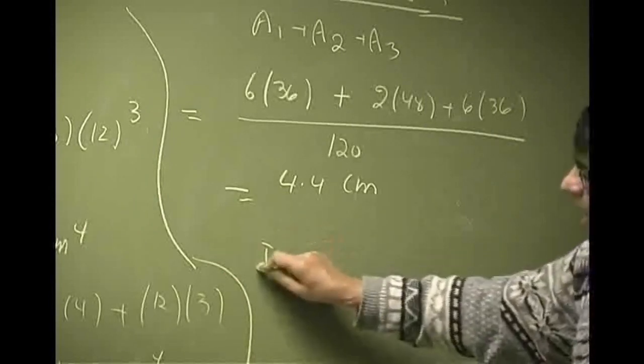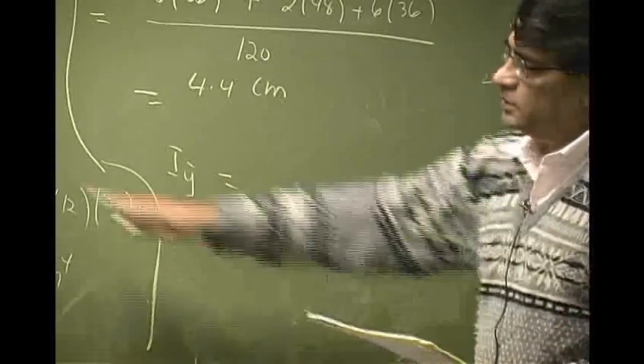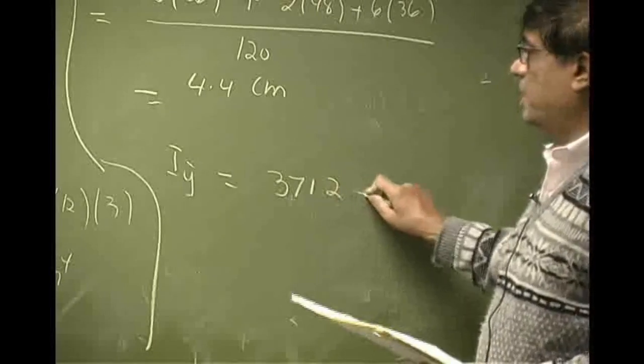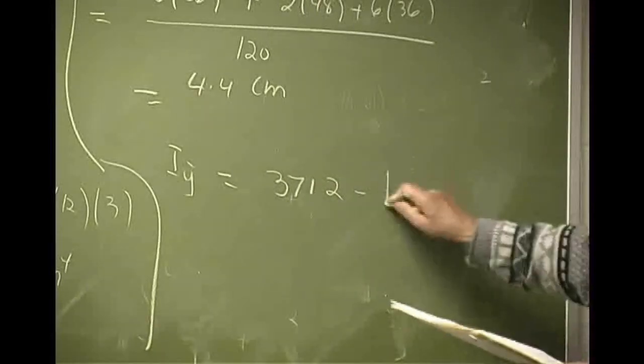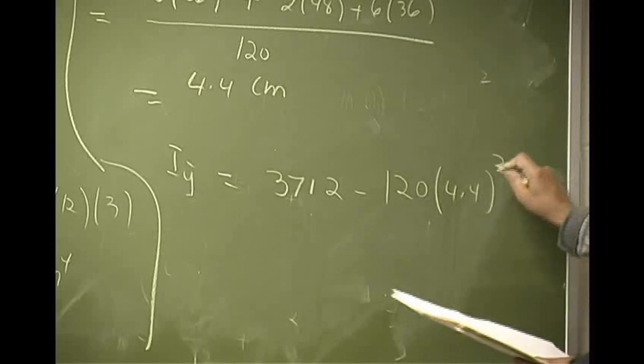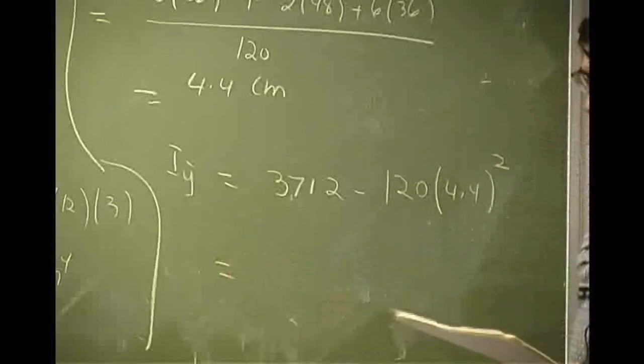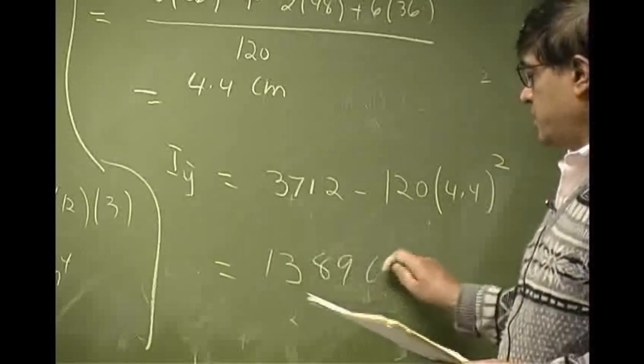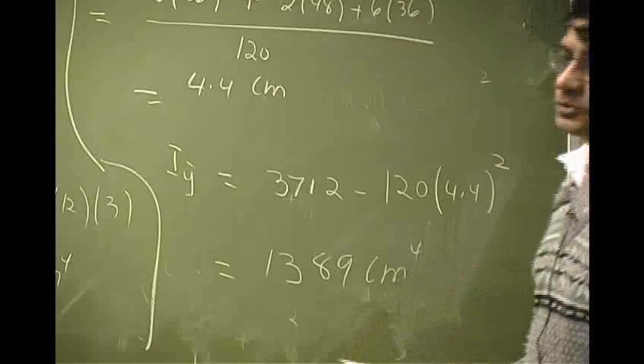So Iy bar will be this number, the 37/12, minus the area which is 120, the distance is 4.4 squared. And this comes out to be approximately 1389 millimeters to the power fourth.